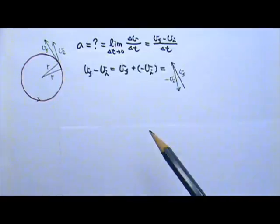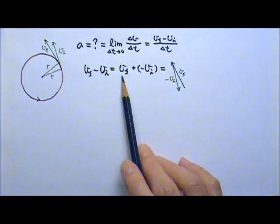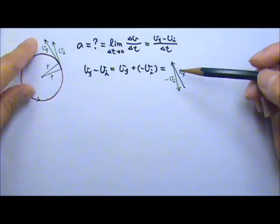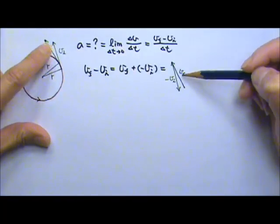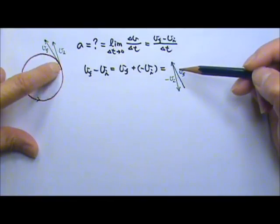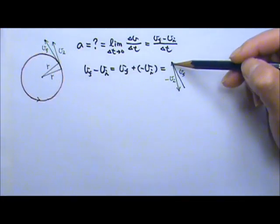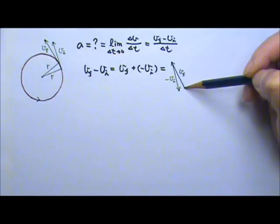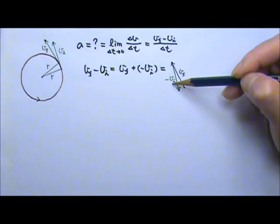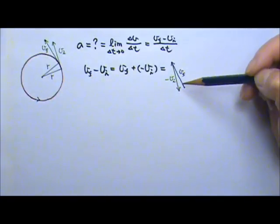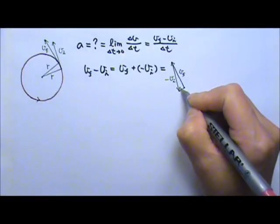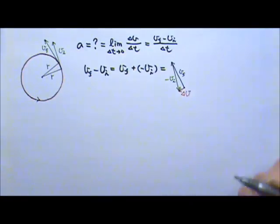To subtract vectors, final minus the initial is the same as the final plus the negative of the initial. So I'm copying the vectors down here. The final velocity is copied here, and then the negative initial velocity is this one flipped over, pointing that way. I'm putting this over here. So I start here with v final plus the negative v initial. I'm adding these two vectors tail to tip, and what I get is a vector that starts here and ends there. So this is the change in velocity.